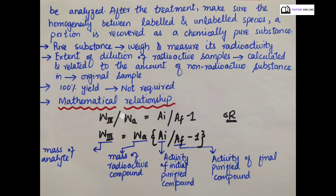Now have a look at the mathematical relationship: W3 / WA = (AI / AF) - 1. Here, W3 is the mass of analyte that we need to find out. WA is the mass of radioactive compound. AI is the activity of the initially purified compound. AF is the activity of the final purified compound.